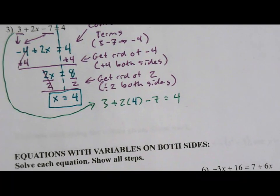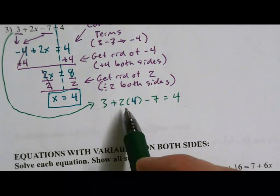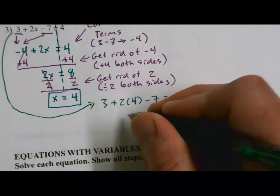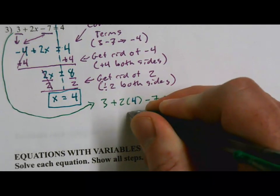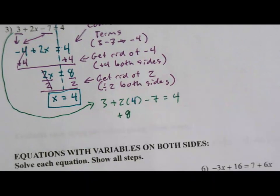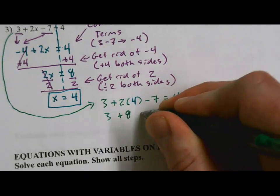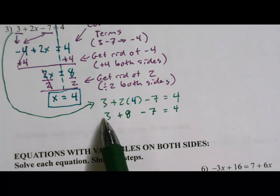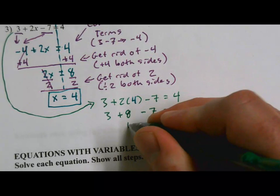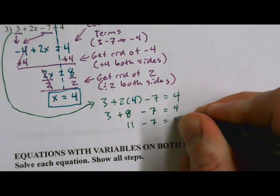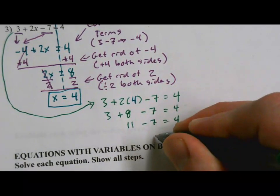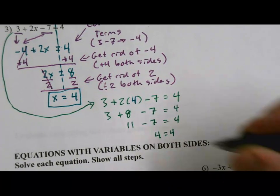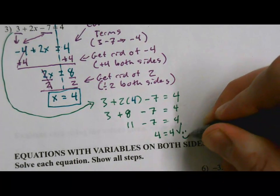So let's do it. PEMDAS tells us multiplication comes before addition or subtraction. So let's do this 2 times 4 first. It's a positive 2 times a positive 4. That's a positive 8. And we'll bring down the 3 and the negative 7. Alright. 3 plus 8 is 11. 11 minus 7 is 4. Look, guys, we got the same number on both sides of the equation. That means our solution checks out and we are happy.